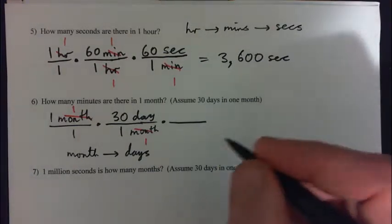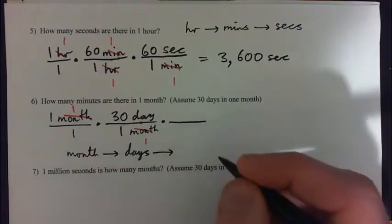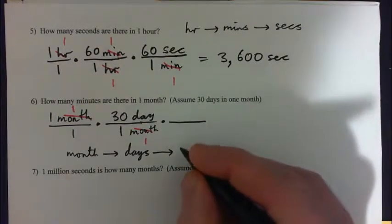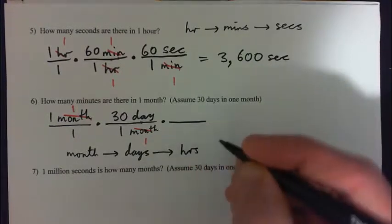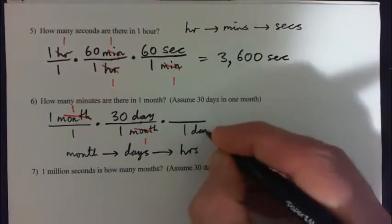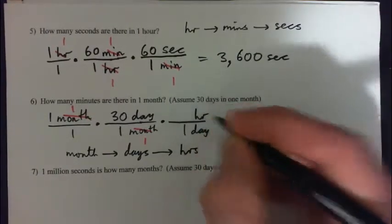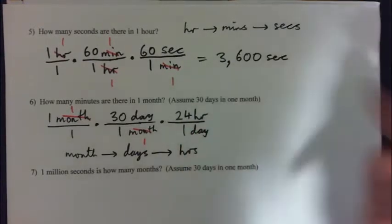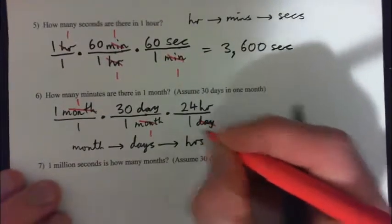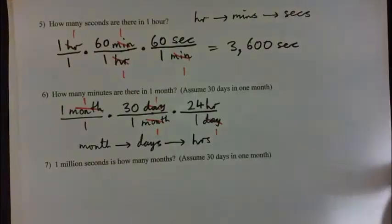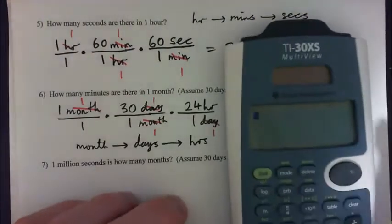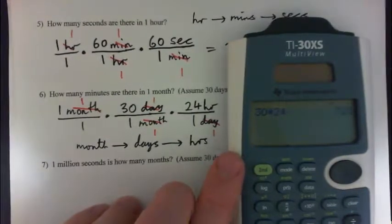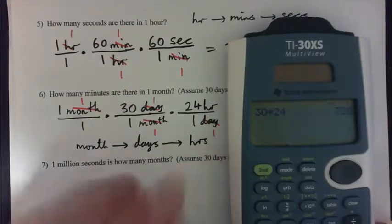Now we've gone from months to days — 30 days in one month, months cross-cancel. What do we get next? Days can be converted to hours. In one day there are 24 hours, so we put days in the denominator and the days cross-cancel. You can do it step by step: 30 times 24 gives 720 hours. So one month equals 720 hours, and then we keep going.